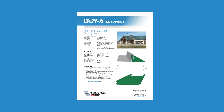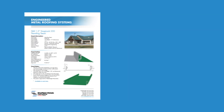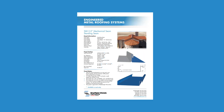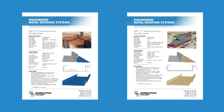A couple of examples of Sheffield Metals panel profiles that work for steep slopes are the inch-and-a-half snap lock 550 panel, the inch-and-three-quarter snap lock. On the mechanically seamed side, the two-inch mechanically seamed profile and the inch-and-a-half mechanically seamed profile will all work with steep slope conditions.